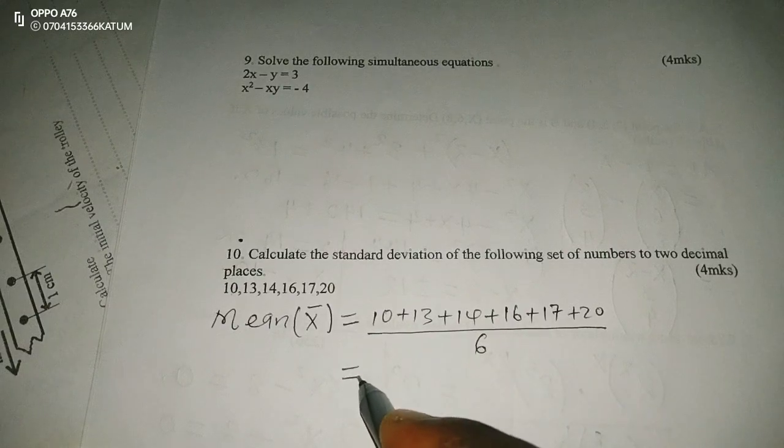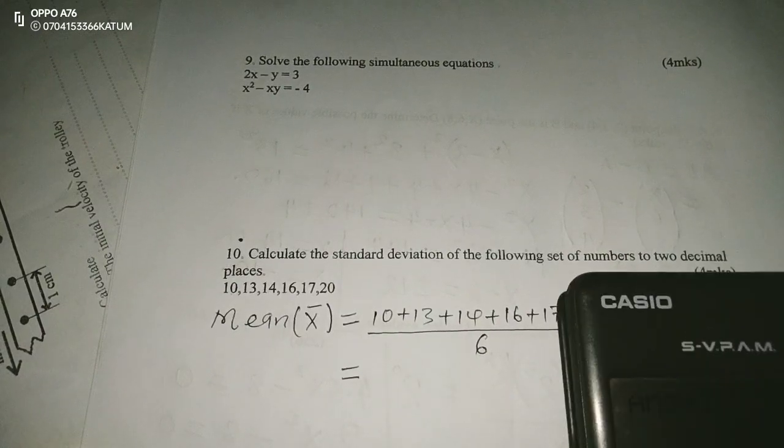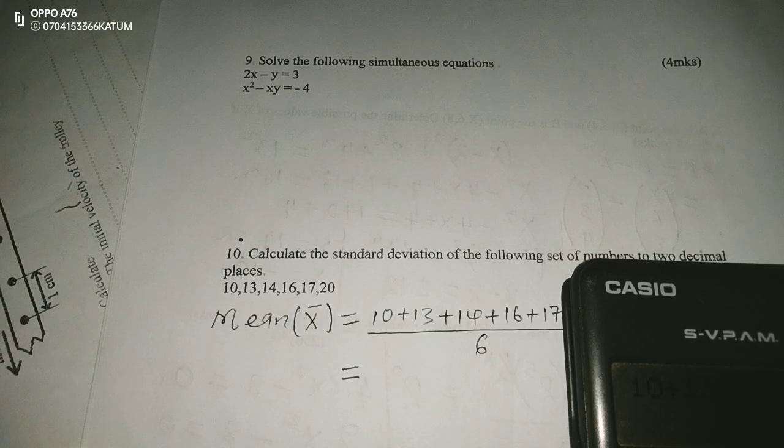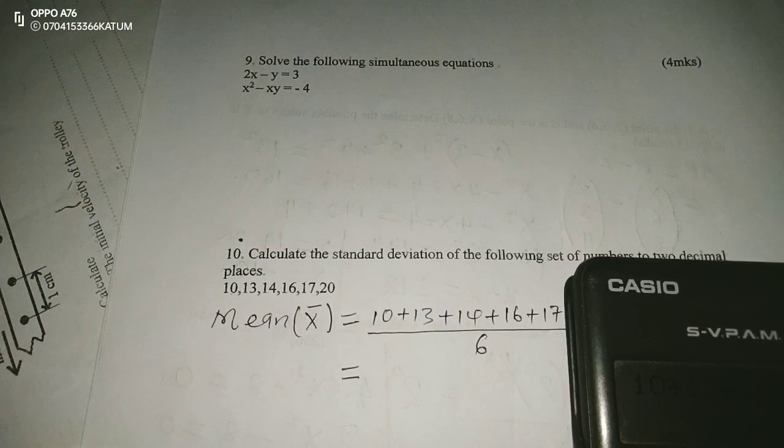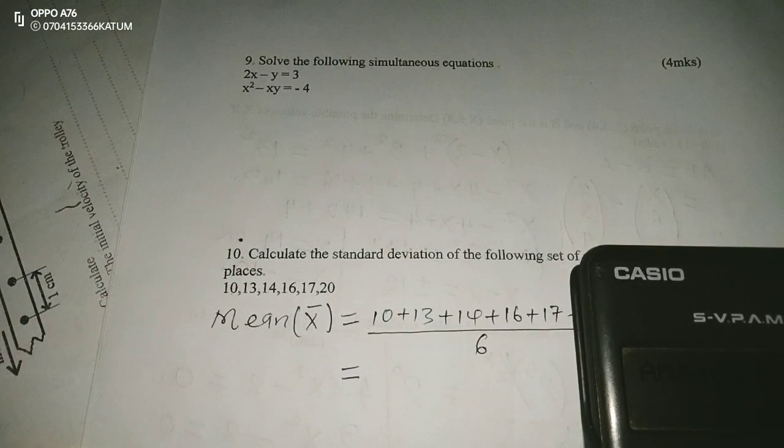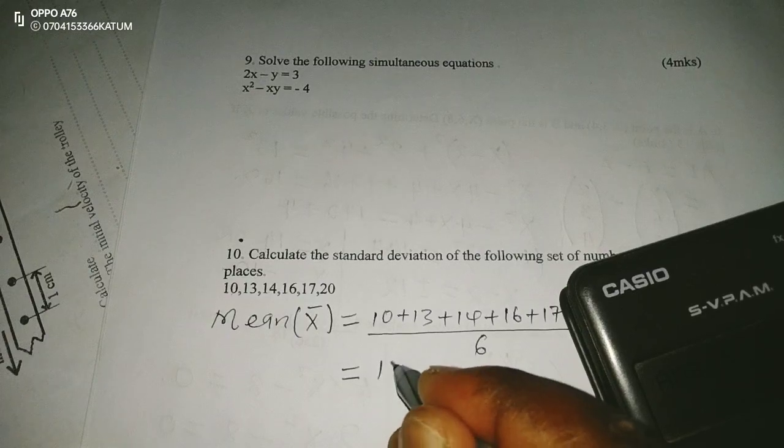I will divide this by 6. Therefore, when I take 10, 13, 14, 16, 17, and 20, I'm getting 90 out of 6. This is giving me exactly 15.